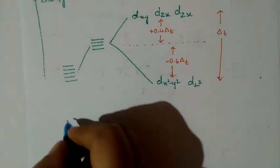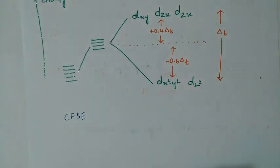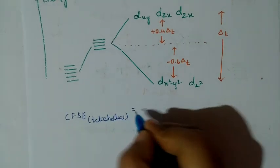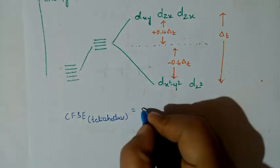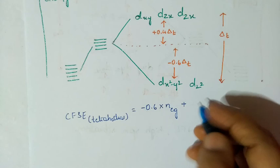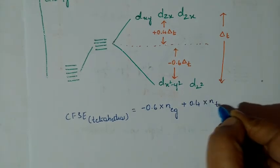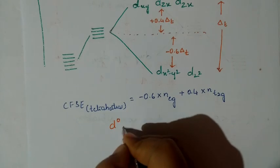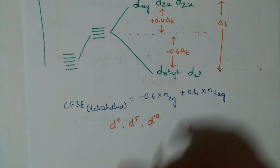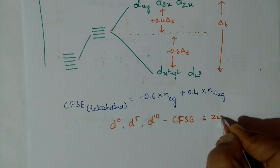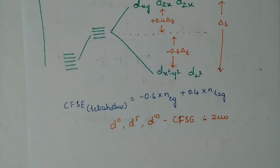The CFSE formula for tetrahedral complexes is: CFSE = (−0.6 × electrons in EG) + (+0.4 × electrons in T2G), where total electrons (paired and unpaired) are counted. For D0, D5, and D10 configurations, the CFSE is 0 regardless of whether the ligand is strong field or weak field.